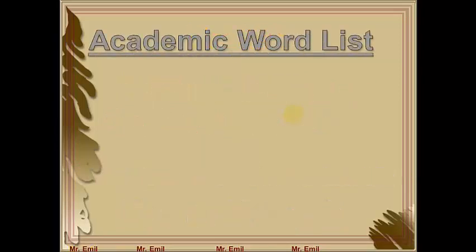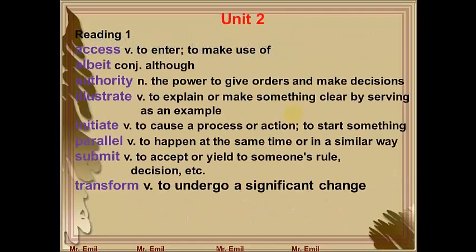In the first reading passage, you will find: 'access' — it's a verb and it means to enter to or to make use of. Number 2, 'albeit' — it's a conjunction and it means although. 'Authority' — it's a noun and it means the power to give orders and make decisions. 'Illustrate' — it's a verb and it means to explain or make something clear by serving as an example.